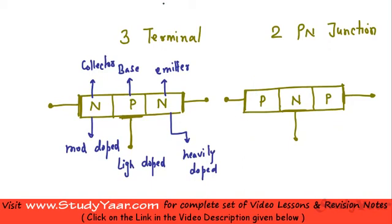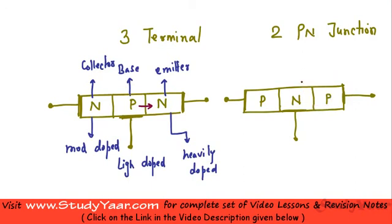Now just see over here — you have a PN junction between your base and emitter. So when it is forward biased, your current is going to flow in this direction. Similarly, you have a PN junction between your base and collector, and when this is forward biased, your current is going to flow in this direction. This is your base, this is your emitter, this is your collector.